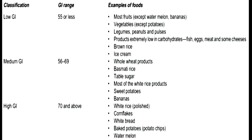We should always prefer foods with low GI values instead of high GI values. Looking at common food items: if you consider rice, brown rice has a low GI value, whereas white rice — that is polished rice — has a high GI value.